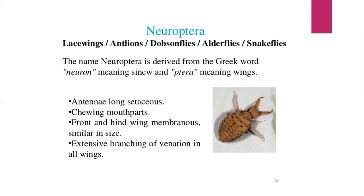Neuroptera — Neuropterans are also known as antlions, dobsonflies, lacewings, alderflies, or snakeflies. The name Neuroptera is derived from the Greek word 'neuron' meaning sinew and 'tera' meaning wings — that is, net-winged or sinew-winged insects. This order consists of about 6,000 species.